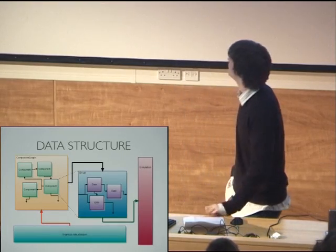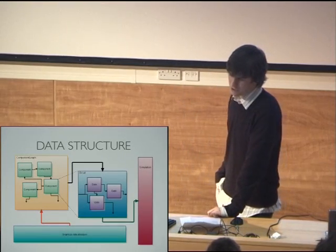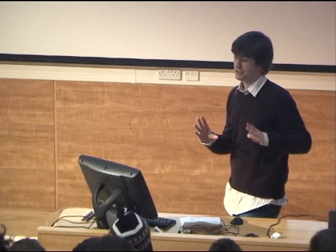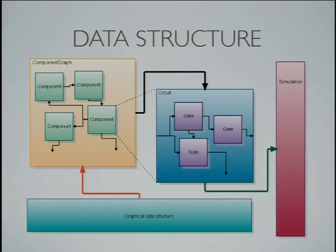Our main data structure consists of a component graph, which is the circuit. Each component also has a circuit within it. When we want to simulate, we take the entire component graph, convert it into a circuit, and then that is what gets simulated.